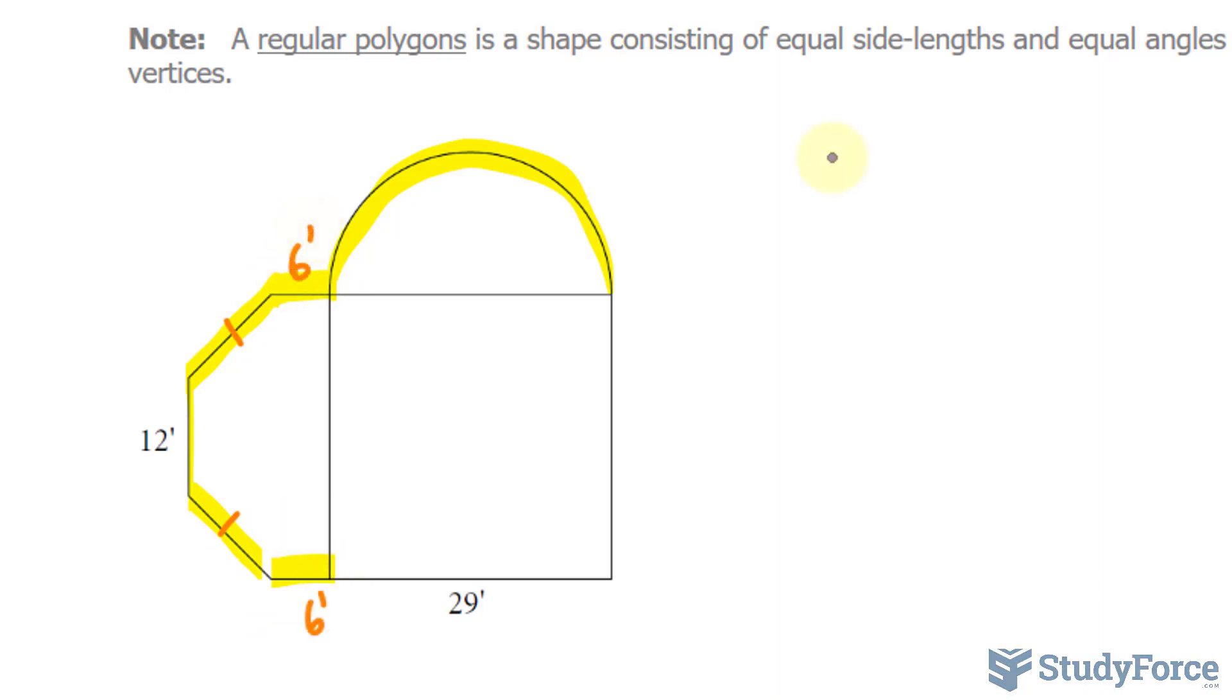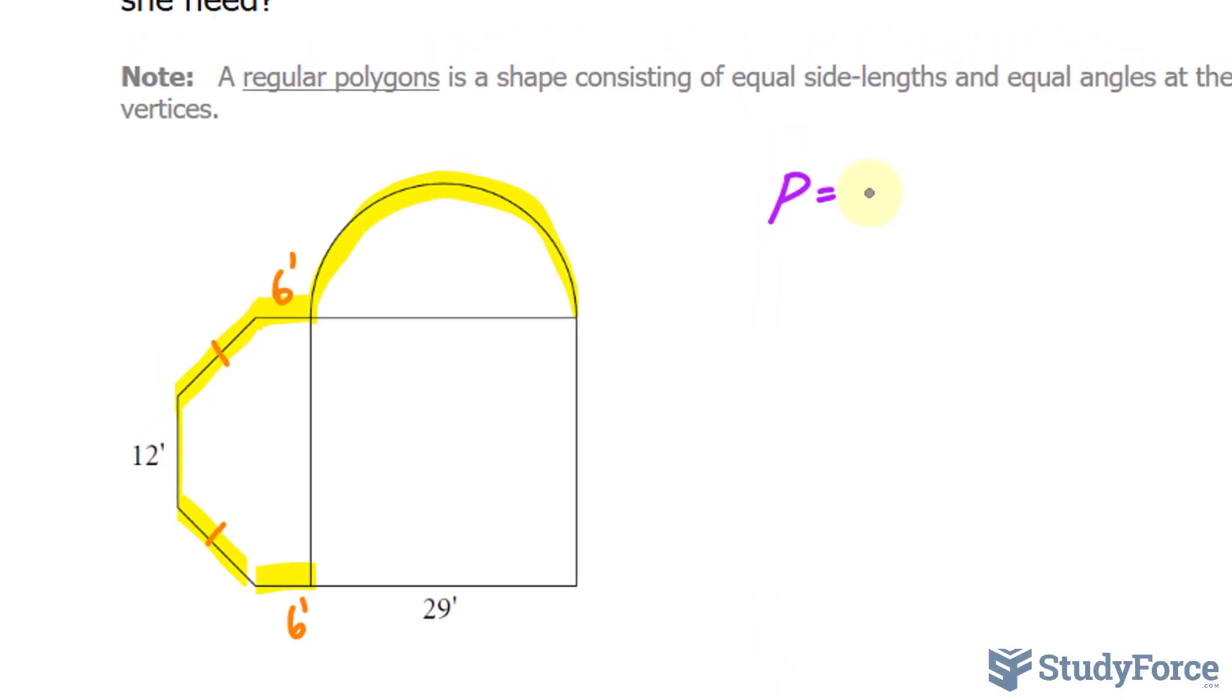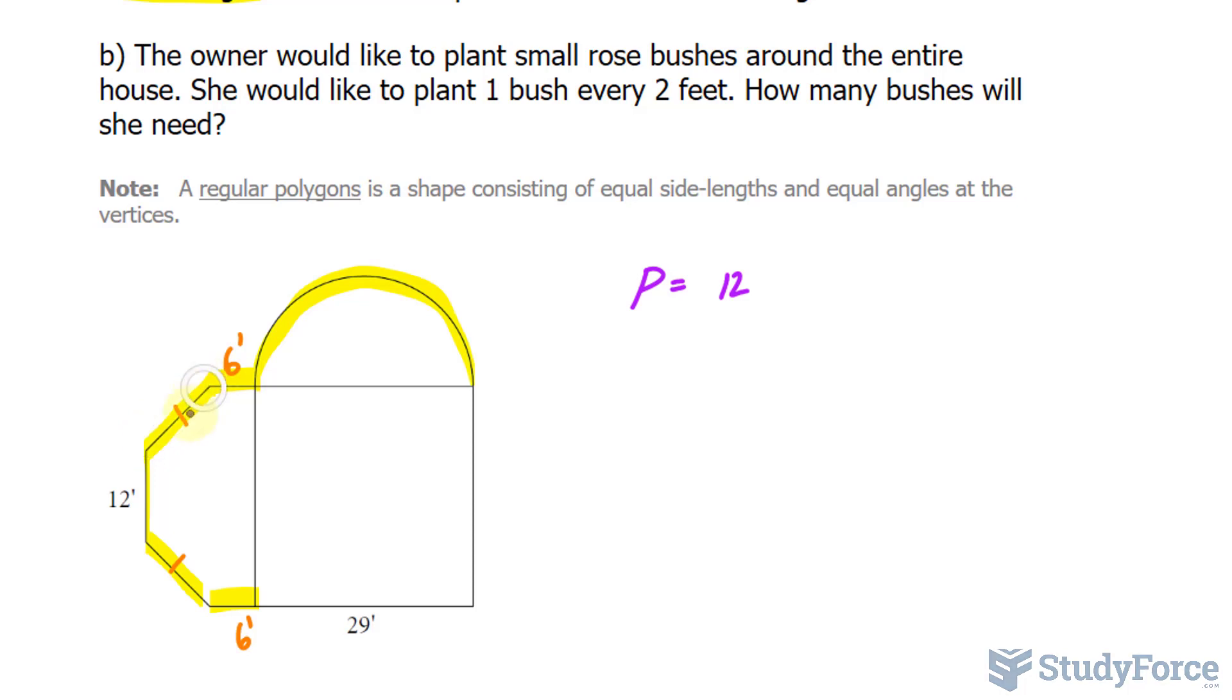We can start by writing out the equation that the perimeter is the sum of all sides. We already know this side, it's 12. We also know this and that, so 12 plus 12 plus 12 plus 6 plus 6. We've covered everything here.